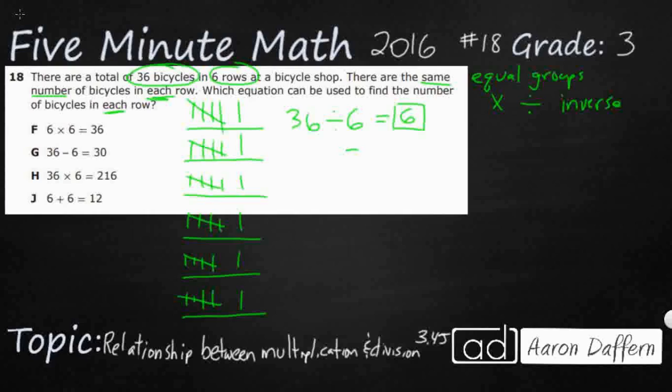Or I could take this as a strip diagram. I could draw it like this. I can say, look, I've got a total of 36, and I want to put them into 6 equal rows. So you can kind of do it like this. And you can just divide these into 6 equal rows. And then the question is, how many goes in each? Well, groups of 6.